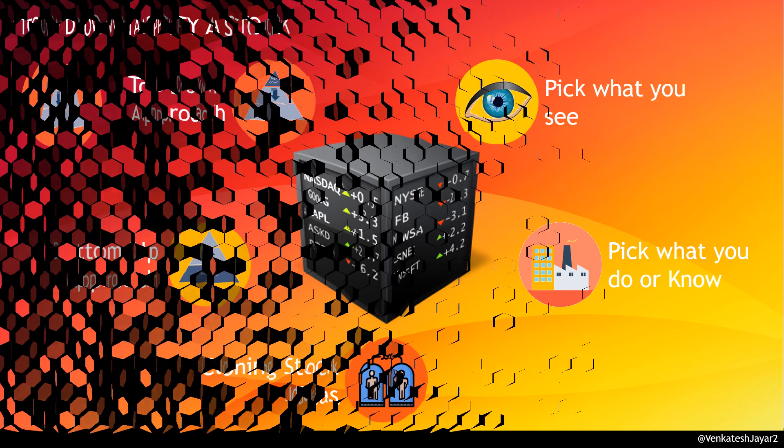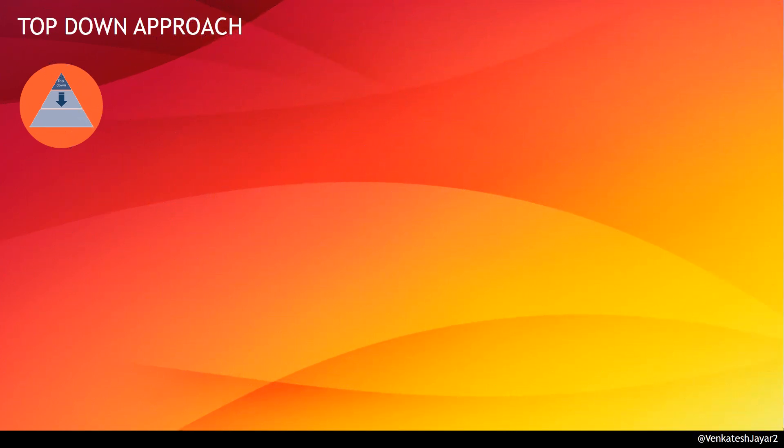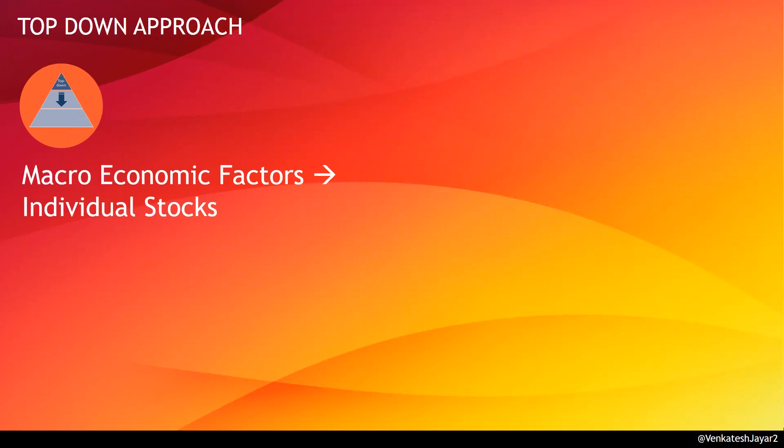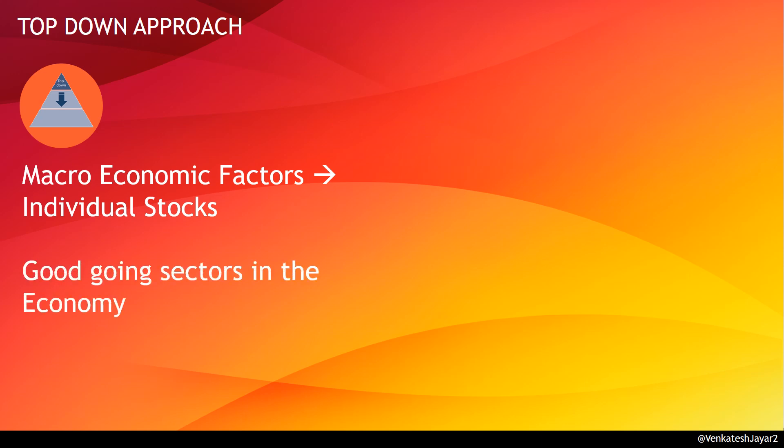Top-down approach: Investors start by looking at macroeconomic factors before working their way down to individual stocks. They pick sectors or industries that are doing well in the economy.